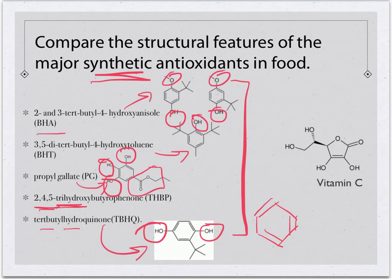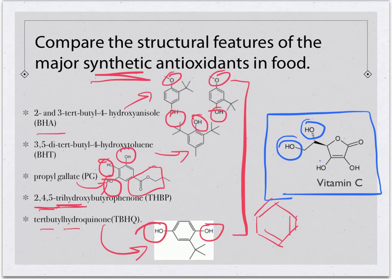Comparing this to a natural antioxidant like vitamin C, notice we still have a cyclical structure, and we also have alcohol groups around that cyclical structure. So there are structural similarities between synthetic antioxidants and naturally occurring antioxidants.